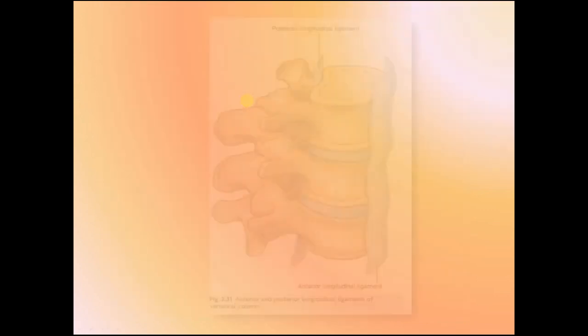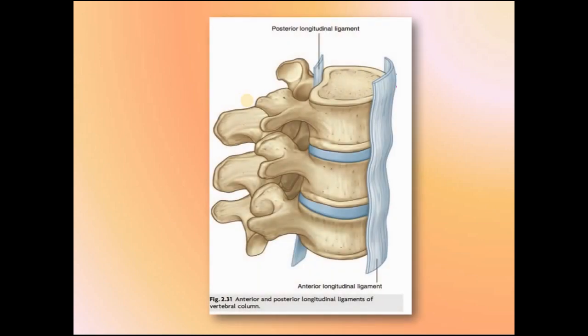Other structures we should know about are the anterior longitudinal and the posterior longitudinal ligaments. As the name suggests, the anterior ligament is present anterior to the vertebral body and the posterior ligament is present behind it. Imagine the anterior ligament, posterior ligament, and the annulus fibrosus as the bodyguards of the nucleus pulposus, which prevent the bulging of the nucleus pulposus from the center.